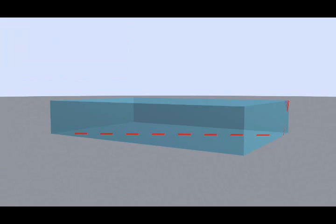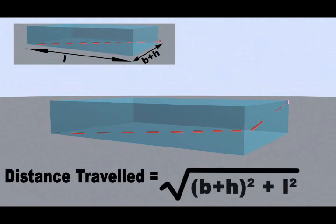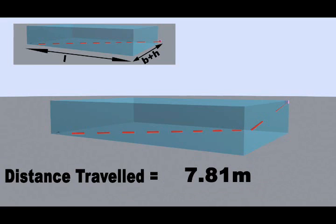We had in the first case opened the cuboid along its length. Now what if we open it along its breadth as shown in the animation? The distance in this case would be the line shown here. So the distance would be square root of breadth plus height whole squared plus length squared. That is 7.81 meters.